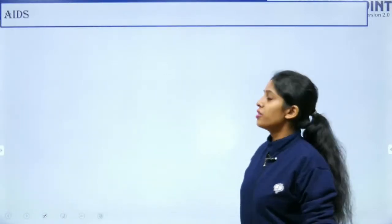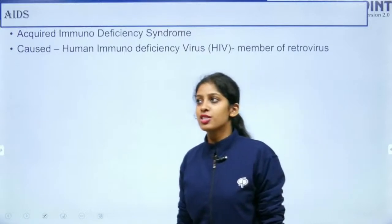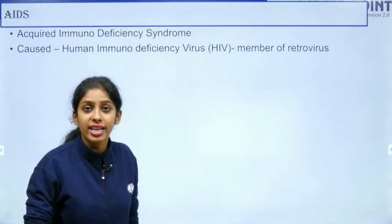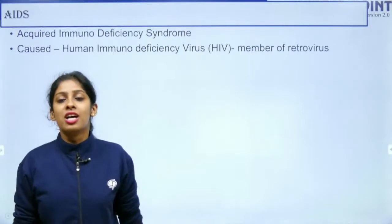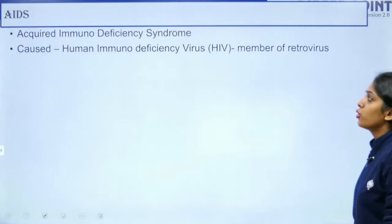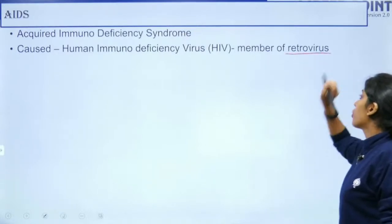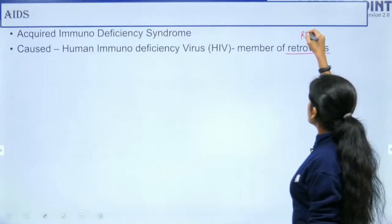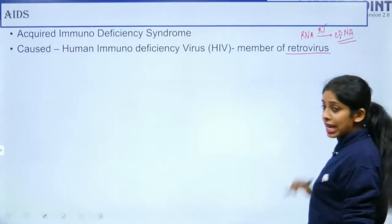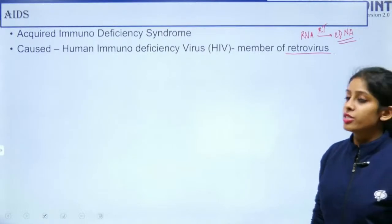AIDS is acquired immunodeficiency syndrome, caused by HIV — human immunodeficiency virus — a member of the retrovirus family. Being HIV positive does not mean the person has AIDS; AIDS is the condition when HIV infection continues for more than seven to nine years. Since HIV is a retrovirus, its genetic material is RNA, and it uses reverse transcriptase to produce complementary DNA to integrate into the host genome.